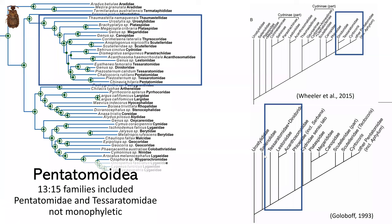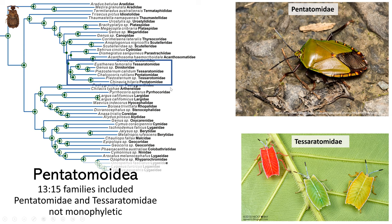Now looking at Pentatomoidea, we included 13 of the 15 families. We found that Pentatomidae and Tesseratomatidae are not monophyletic — highlighted here, you can see that Tesseratomatidae is coming out within Pentatomidae.